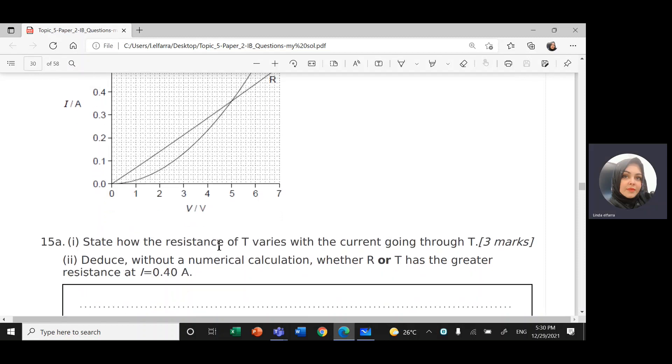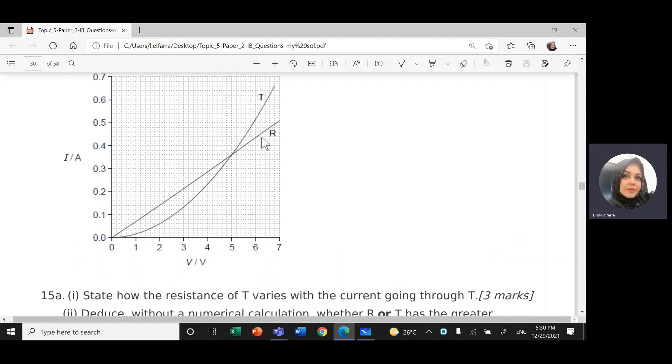State how the resistance T, the one that does not obey Ohm's law, the non-ohmic resistance, varies with current. R obeys Ohm's law. As I increase the current, voltage will increase.